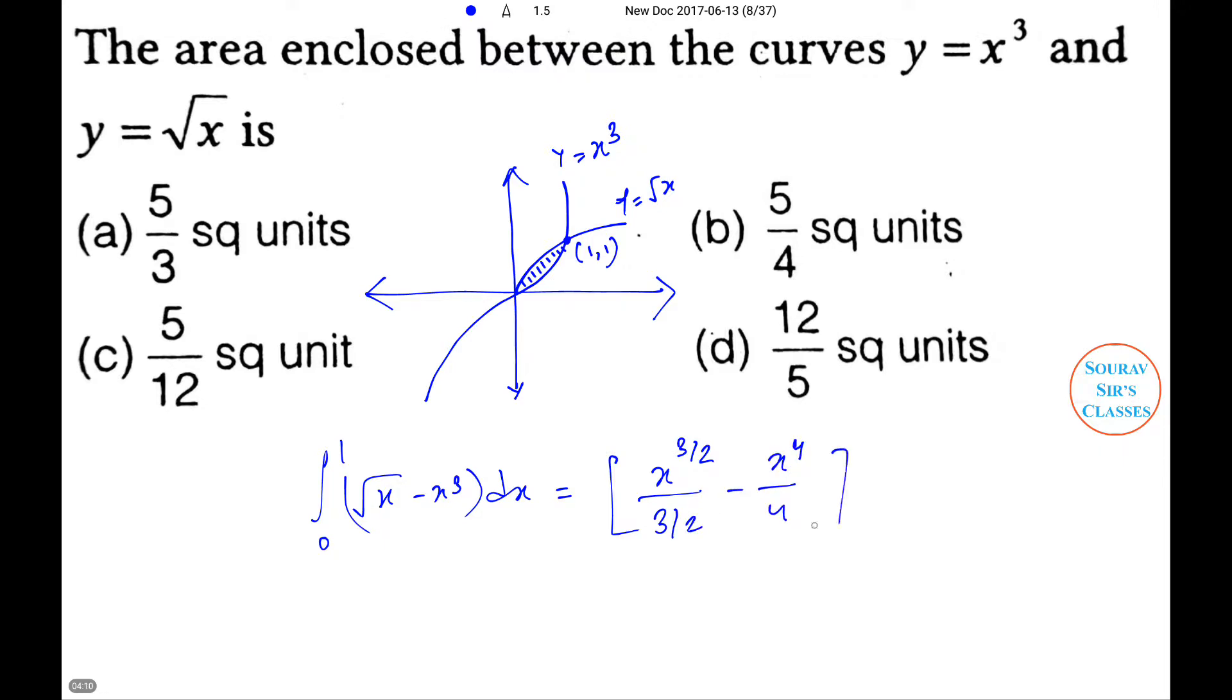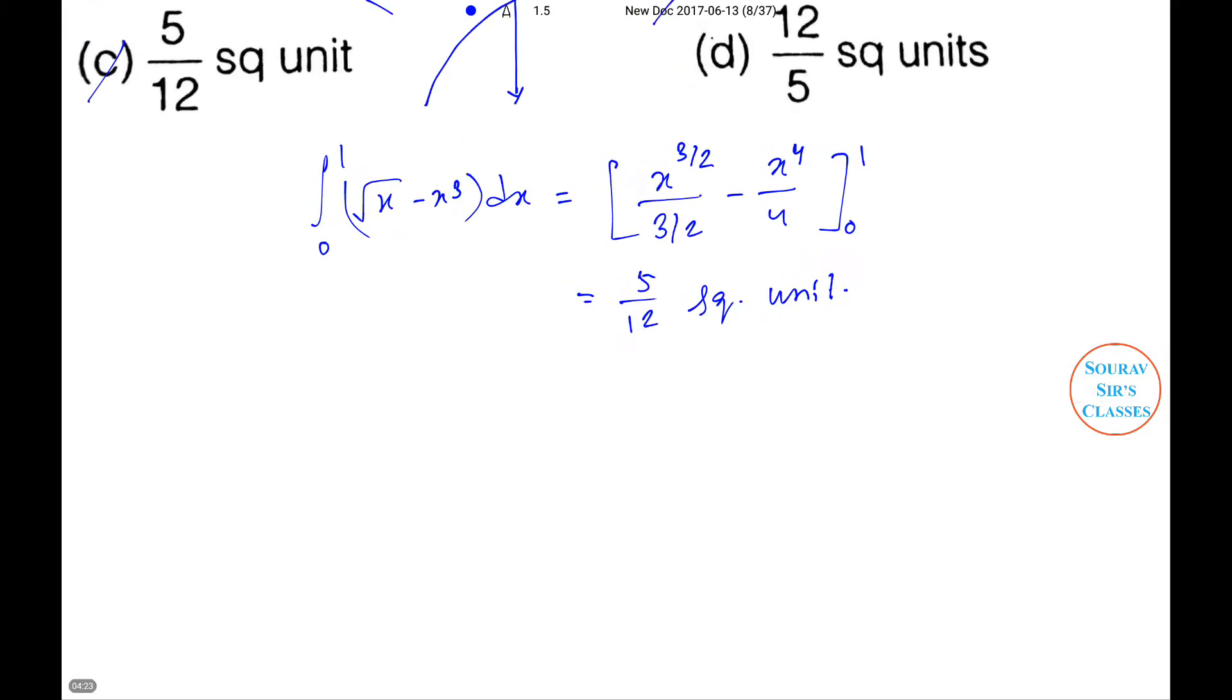That equals x to the power 3 by 2 divided by 3 by 2, minus x to the power 4 by 4, from 0 to 1. That equals 5 by 12 square units. So option C will be the right answer. Next problem.